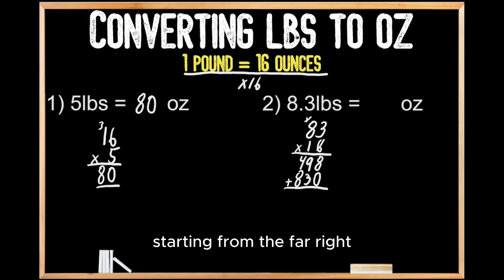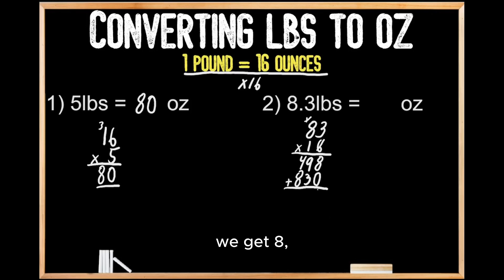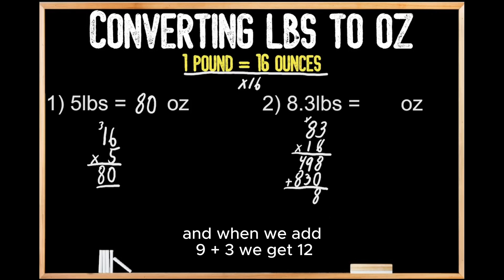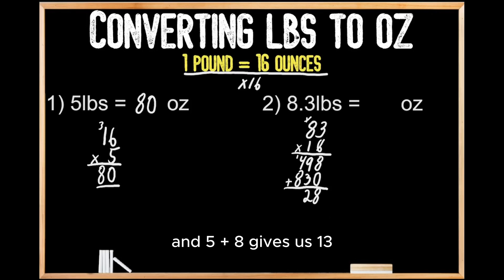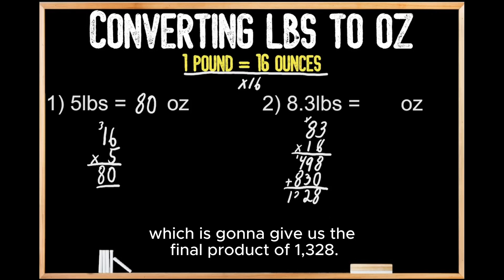Now we're going to add these partial products together starting from the far right. When we add eight plus zero, we get eight. When we add nine plus three, we get 12, so we write the two and carry the one. One plus four gives us five, and five plus eight gives us 13, which gives us the final product of 1,328.